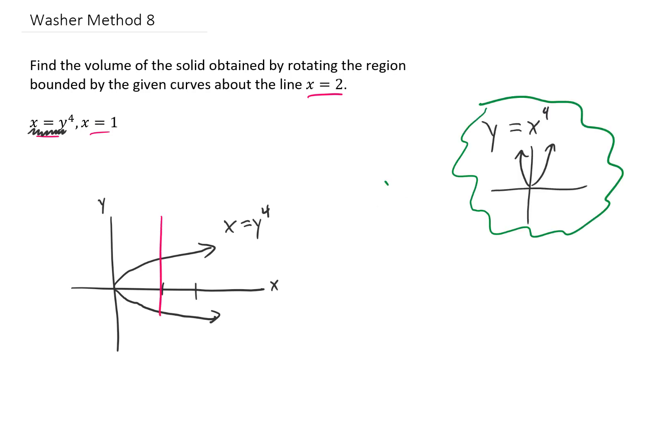The line x equals 1 is just going to look like this. So the region in question is that region right there. And we're going to rotate this region around the line x equals 2. And we're just going to use the washer method to do this.